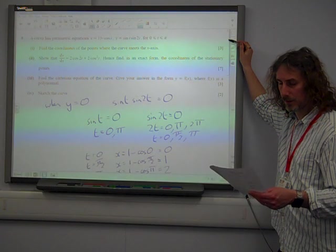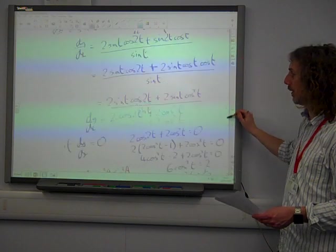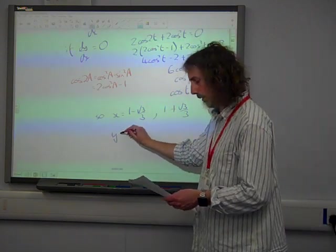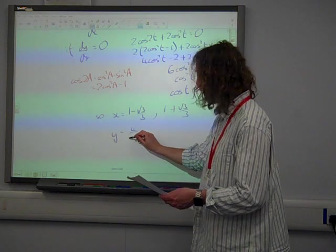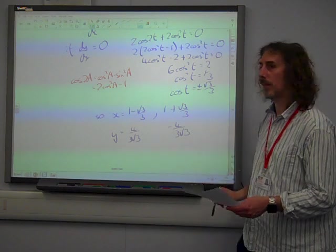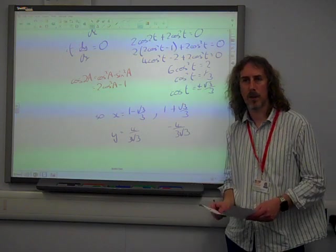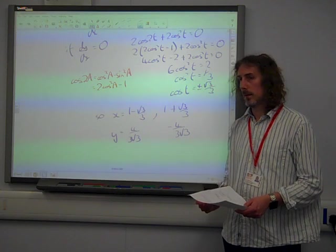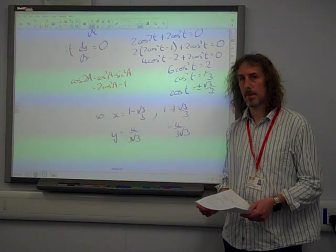If cos t is plus or minus root 3 over 3, x is 1 minus that, or 1 plus root 3 over 3. That's because x is 1 minus cos t. And then, you probably do want to find the value of t to sub it in to get the y-coordinate. But you can do it exactly. It gives you 4 over 3 root 3 for that one, and minus 4 over 3 root 3 for that one, if we work them back in.